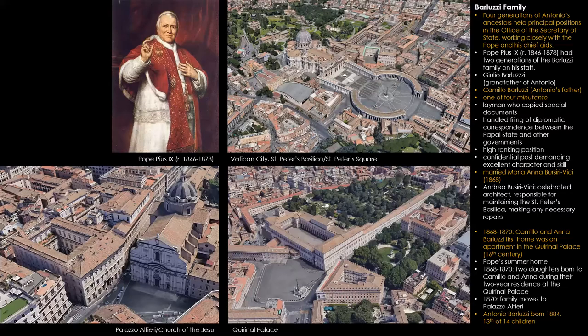His father, Camille Barluzzi, was one of four lay minuti who copied special documents for diplomatic work with other foreign countries with the Vatican. His father married his mother, Maria Anna Sirivici, in 1868. Her father Andrea was a celebrated architect who was responsible for maintaining the Vatican and St. Peter's. When they were first married, they lived in the Quirinal Palace on top of Quirinal Hill for the first two years, and the first two daughters were born there. Later on, the family moved to the Palazzo Alciere, near the Church of the Gesù. That's where Antonio was born in 1884, the 13th of 14 children.